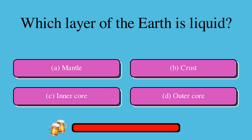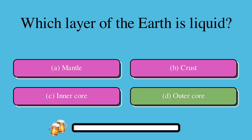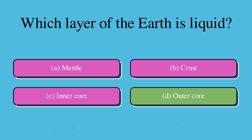Which layer of the Earth is liquid? A. Mantle, or B. Crust, or C. Inner core, or D. Outer core? The correct answer is D. Outer core.